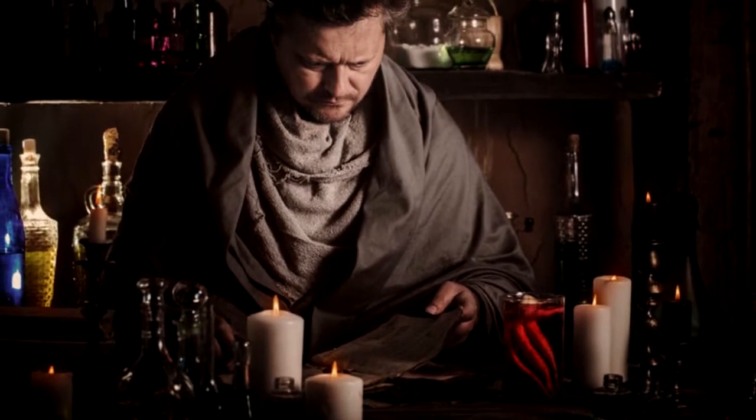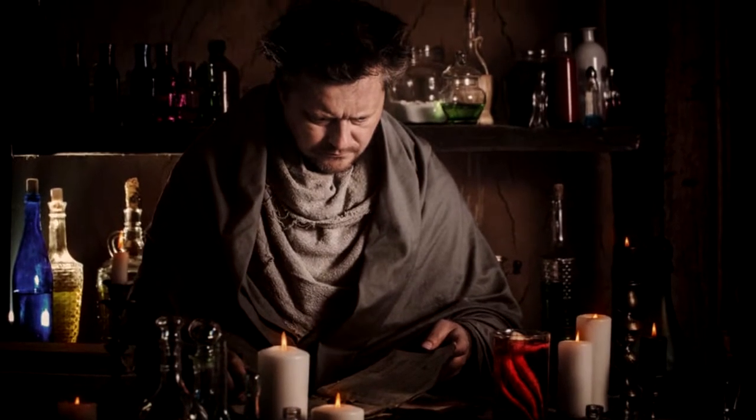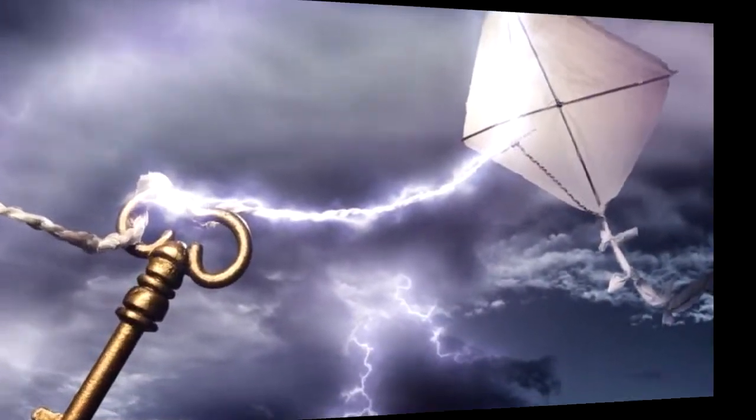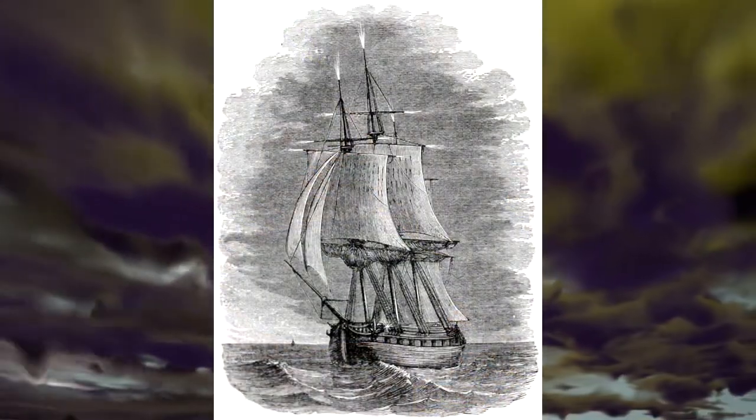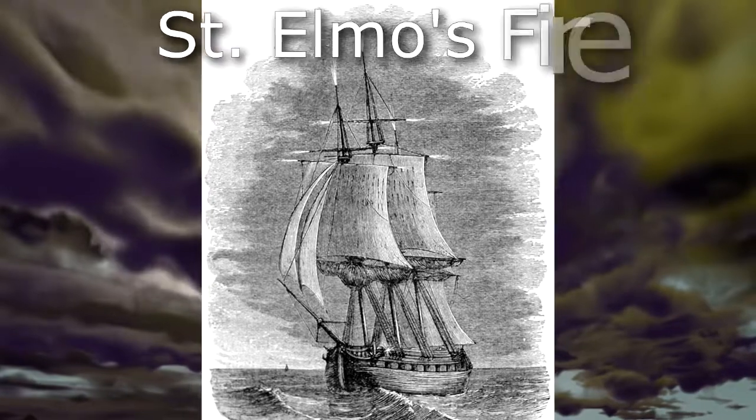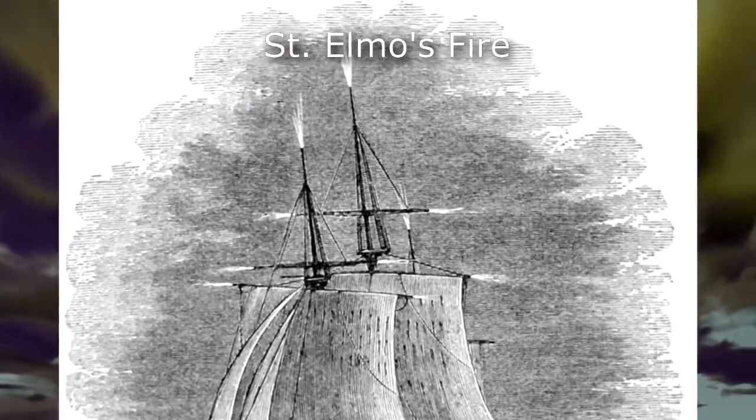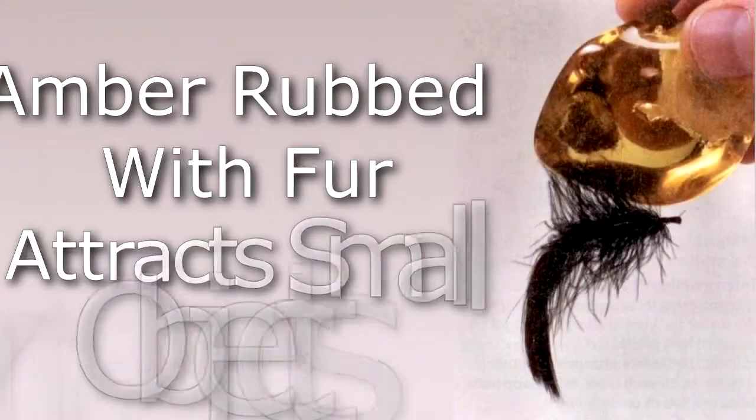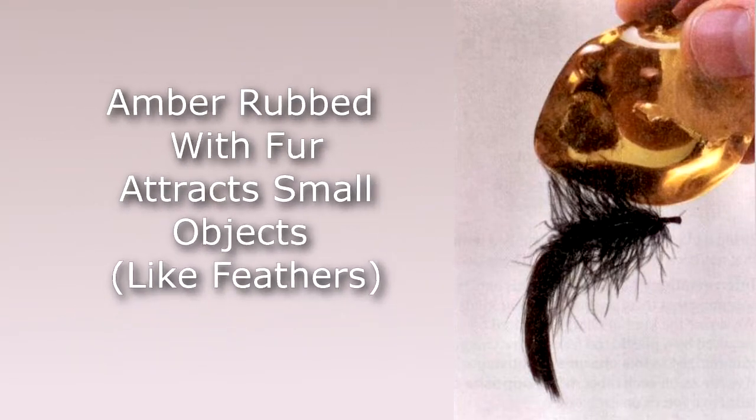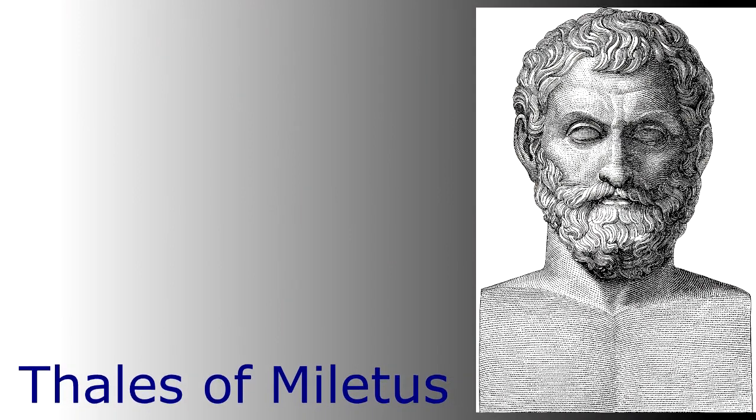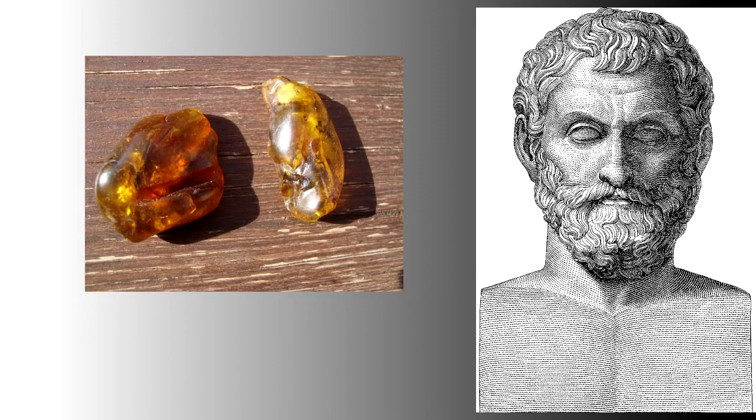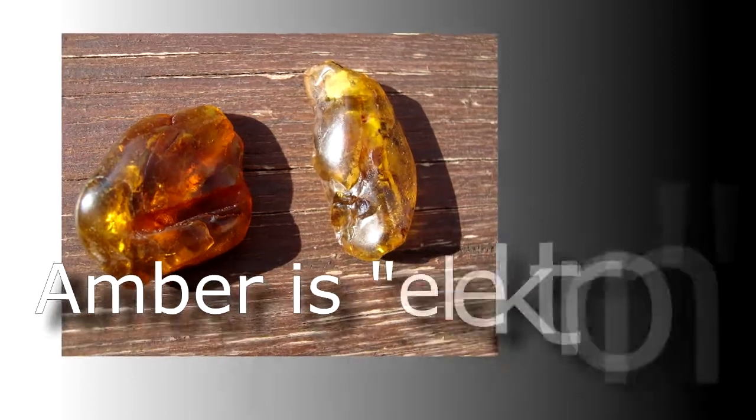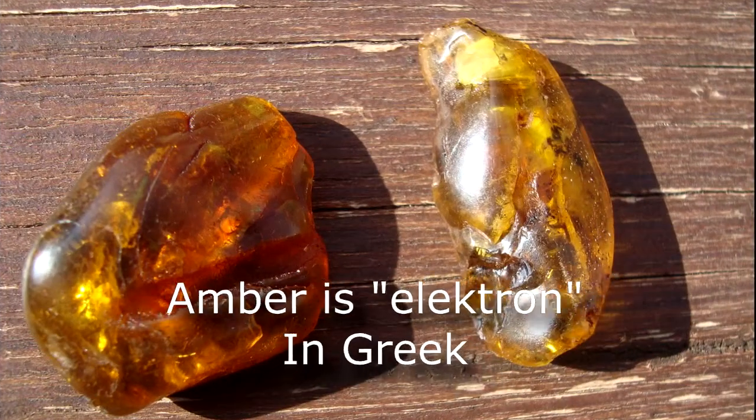From ancient times, people were familiar with different types of phenomena that today would be explained using the concept of electric charge. For example, lightning, electric fish like electric eels, electric ray, torpedo fish, St. Elmo's fire, which is the corona discharge coming off the top of a ship, the mast at the very top, which you could see as a glow in the distance. And amber rubbed with fur would attract small light objects. Actually, it's been recorded that Thales of Miletus around 640 BC rubbed amber, which is fossilized tree sap, and discovered it would attract leaves. In fact, amber is called electron in Greek or electrum in Latin. So the word electron comes from amber.